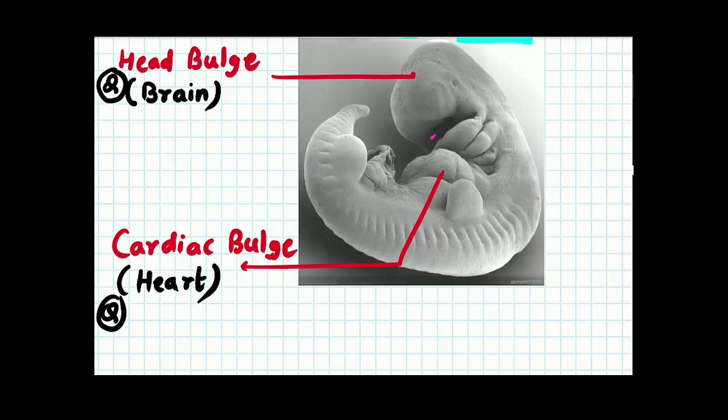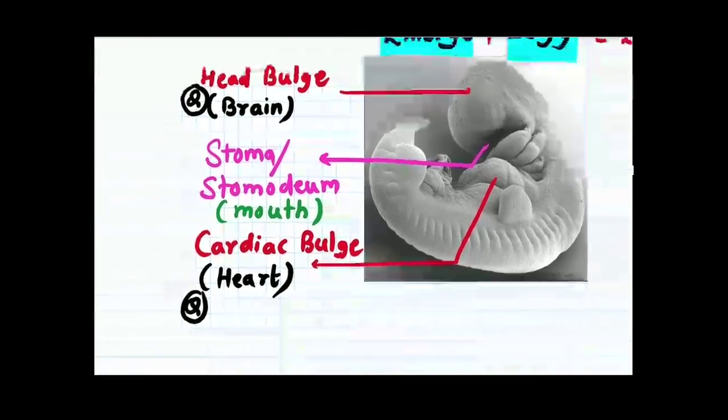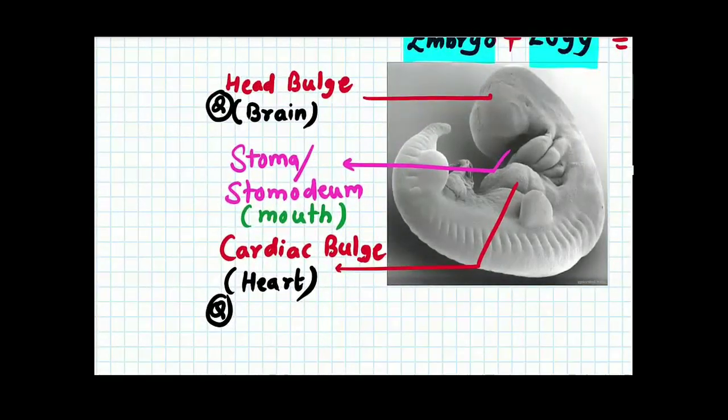Can you see in this image, there is one opening situated between the head bulge and the cardiac bulge. This opening is known as stoma. It is also considered as stomodium. What is the meaning of the stoma? As you know, the stoma means mouth. This is known as the mouth. Now, clinically correlate this stoma or stomodium.